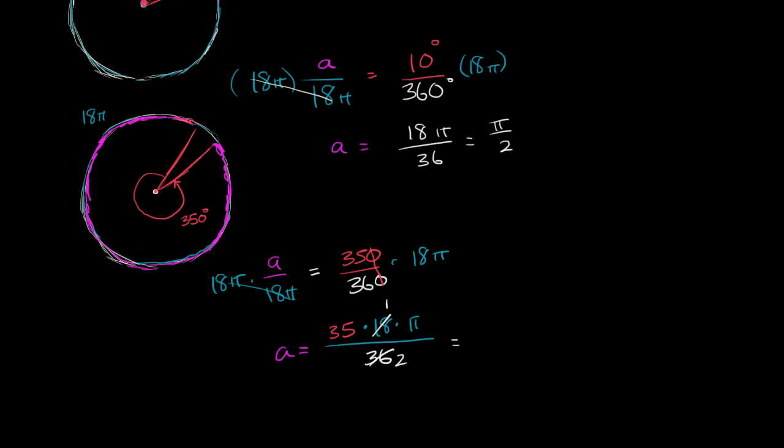Or we could even say, let me just write it that way, 35π over 2, or if you wanted to write it as a decimal, this would be 17.5π.